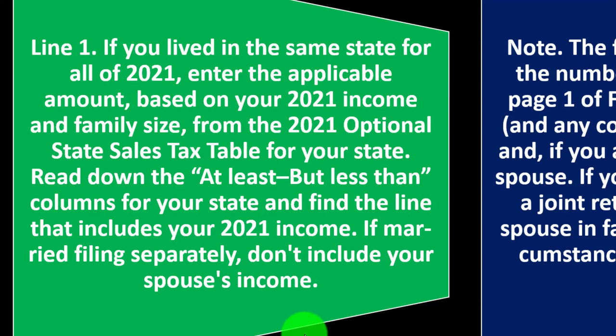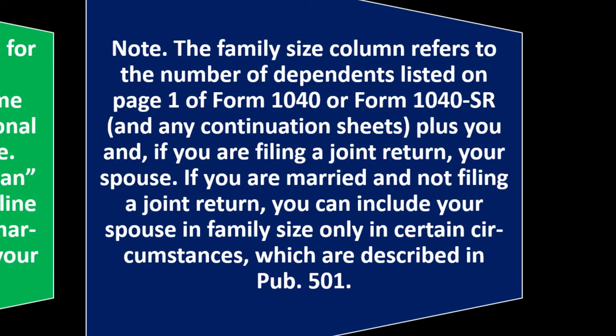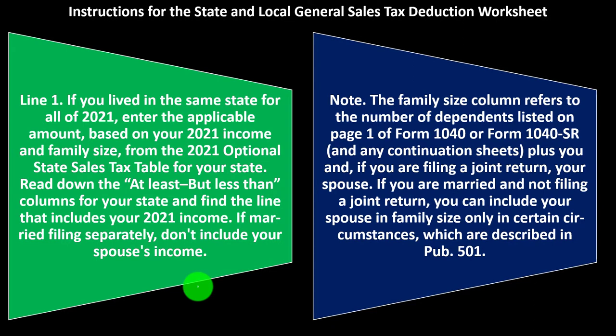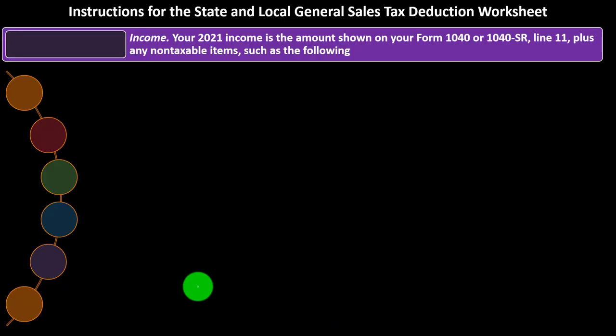Software is helpful in these instances. Note: the family size column refers to the number of dependents listed on Page 1 of Form 1040 or Form 1040-SR plus you, and if filing a joint return, your spouse. Your 2021 income for the worksheet is the amount shown on Form 1040 or 1040-SR Line 11, plus any non-taxable income.